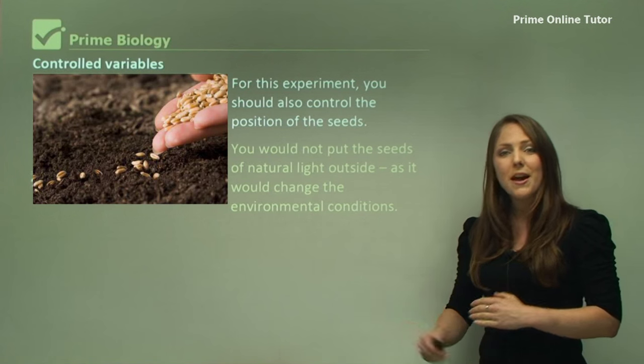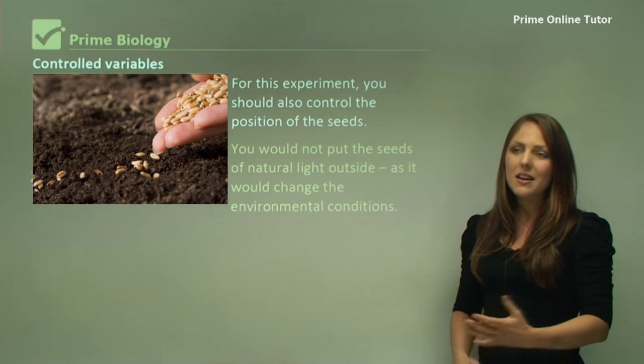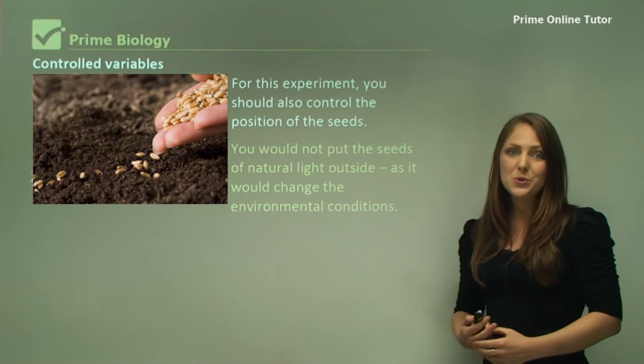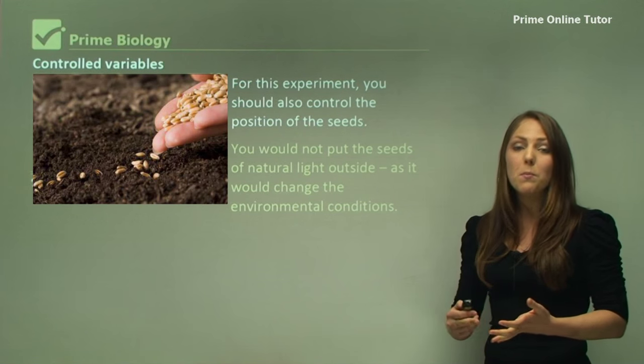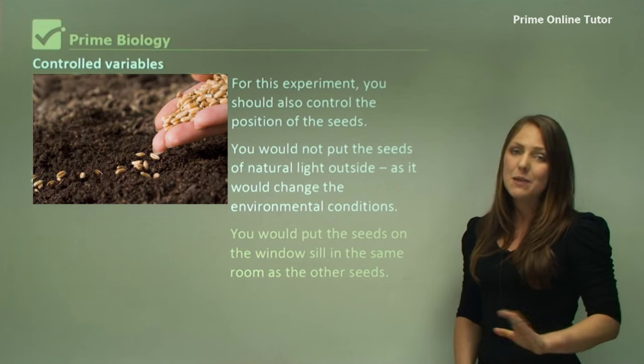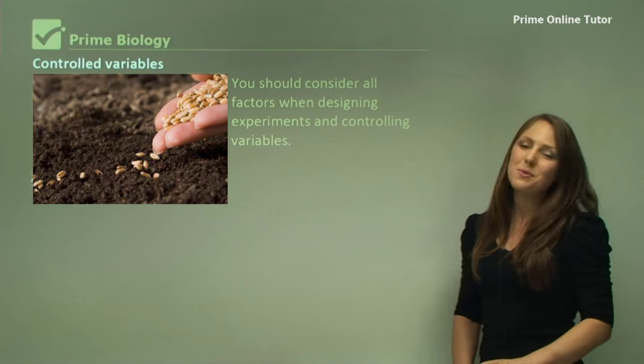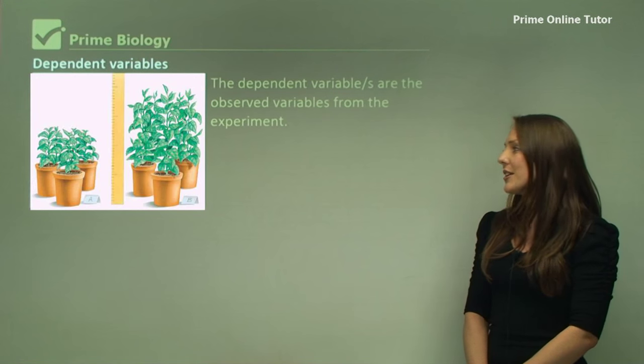Because if you put them outside in natural light, that actually means that you're changing the environment and they may be exposed to more sunlight or even more water if it rains. You would put the seeds on the windowsill in the same room as the dark seeds. You should consider all factors when designing experiments and controlling variables.